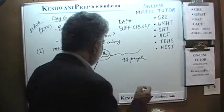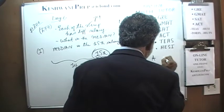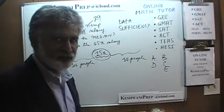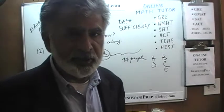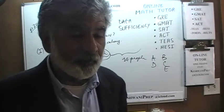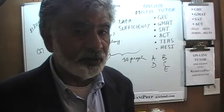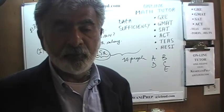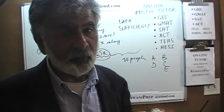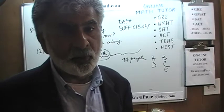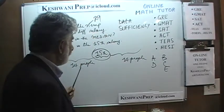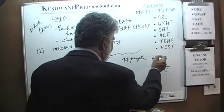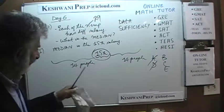Statement 1 by itself does not enable us to find out what the median is. Perhaps if we put this information together with the second statement, we will be able to figure out what the median is. But right now all we know is that there are 29 people. So the first statement by itself is not enough — that tells us the answer cannot be A or D. Let's look at the second statement.